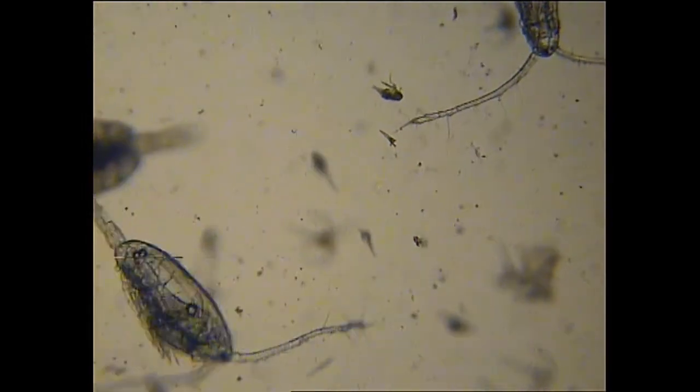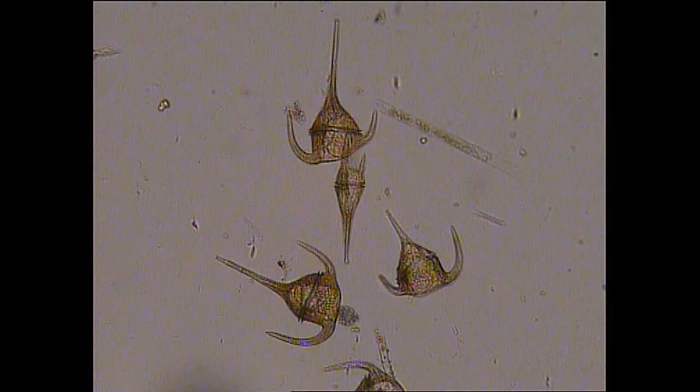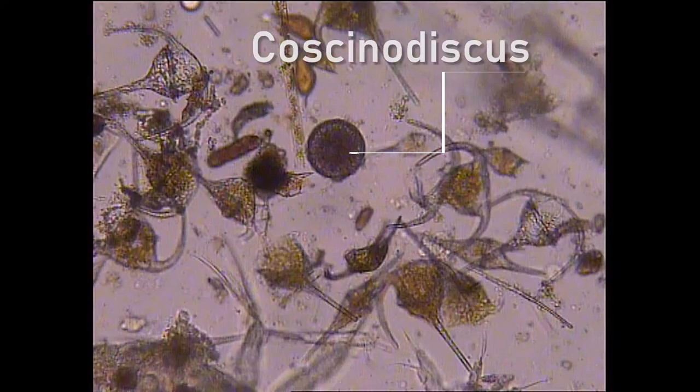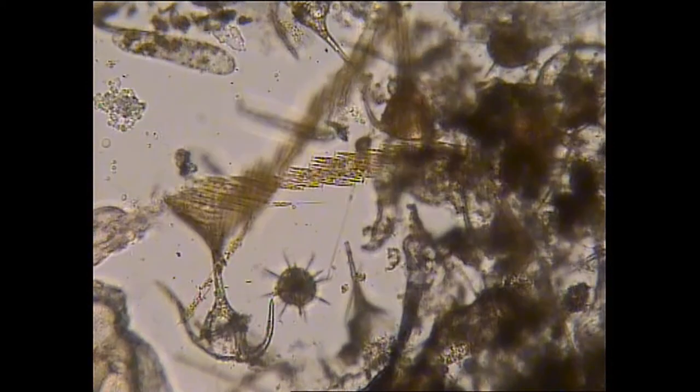We call plant plankton phytoplankton. Examples of phytoplankton you may see under the microscope at the Marine Discovery Center include Tripos, Cocinidiscus, and the moving colony of Bacillaria.